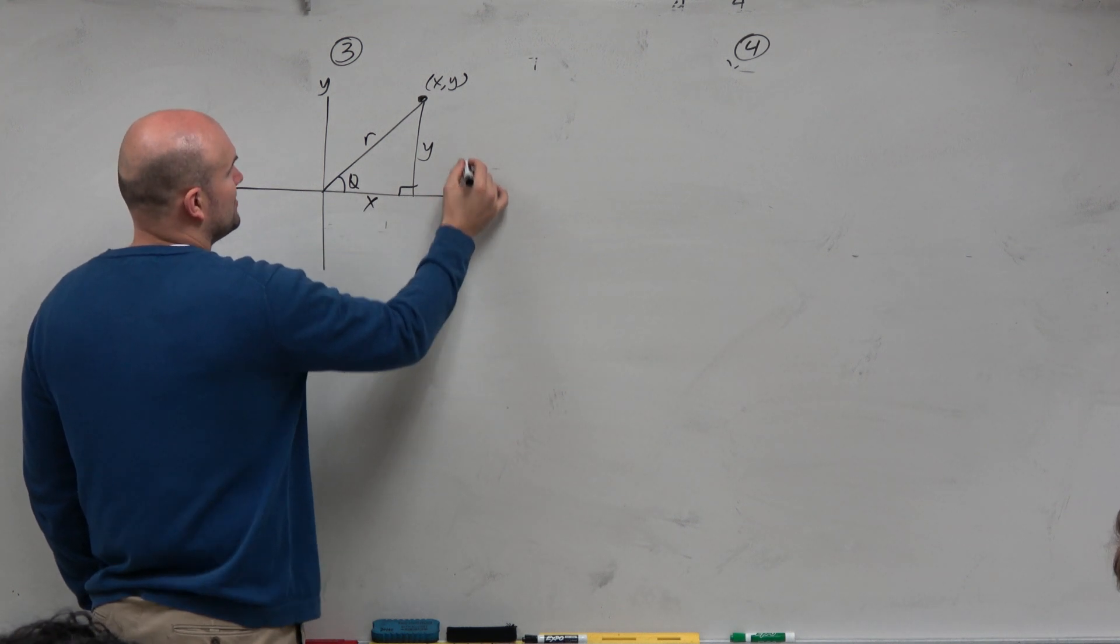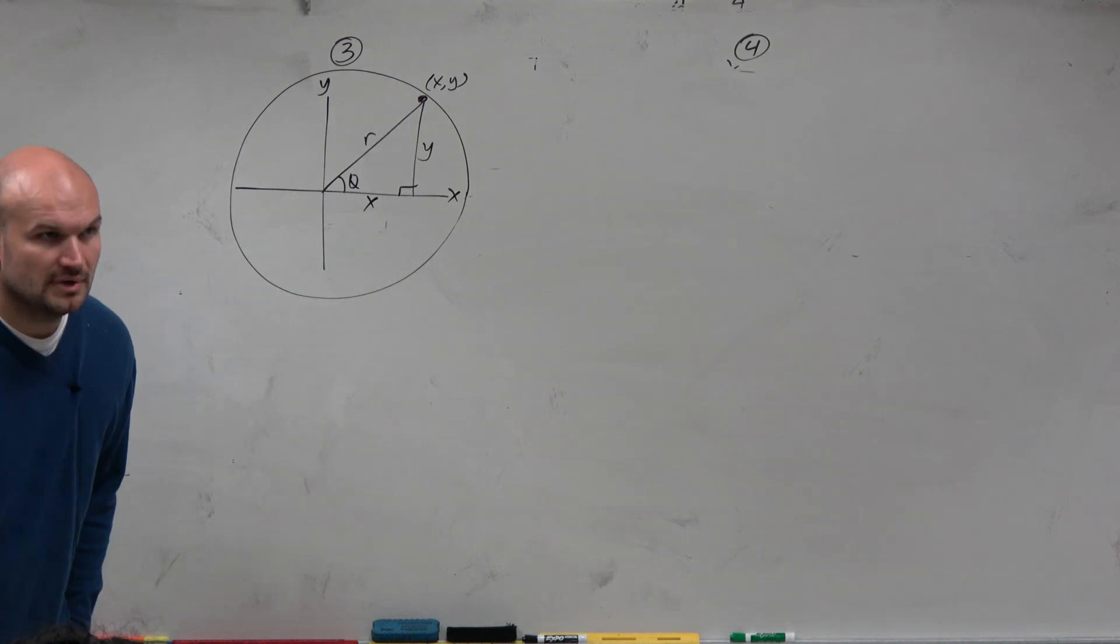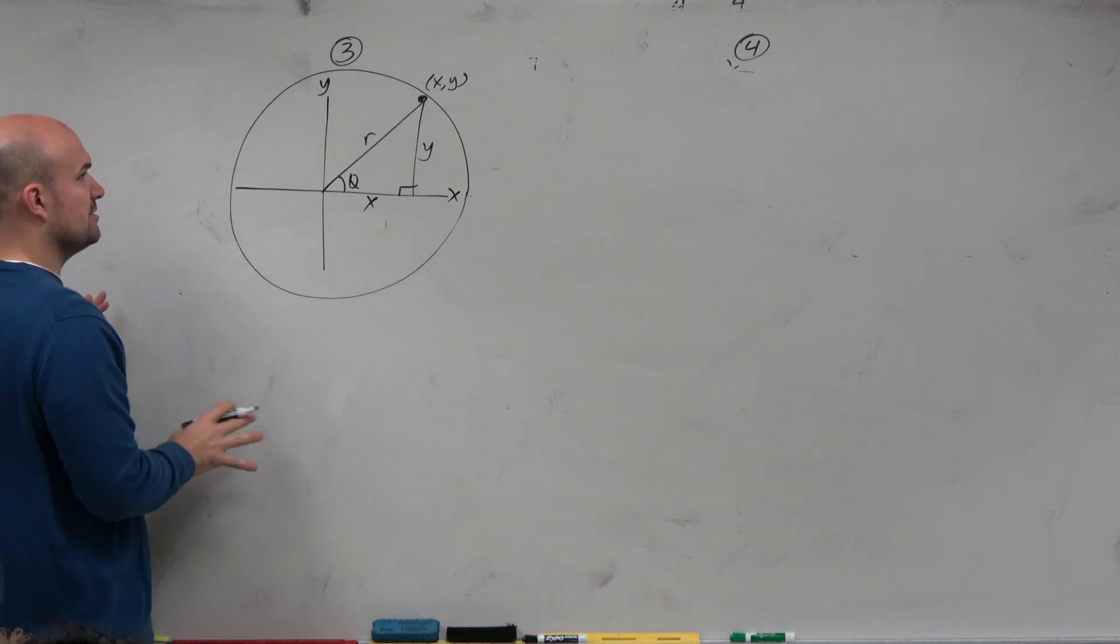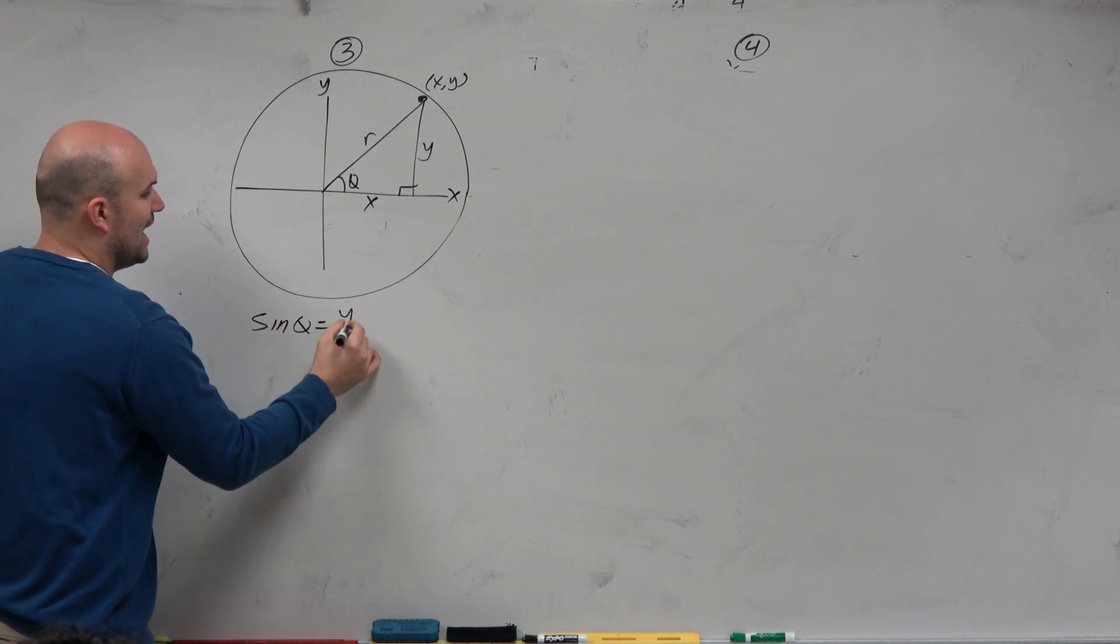And the reason why we label it as R is because that kind of represents some radius of a circle. And so we went through our six trigonometric functions. For instance, the sine of theta was now y over R.